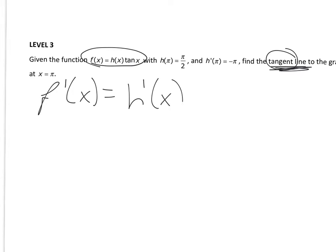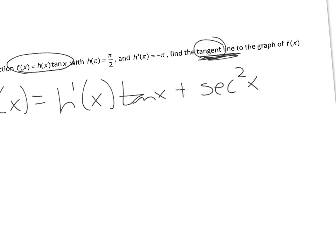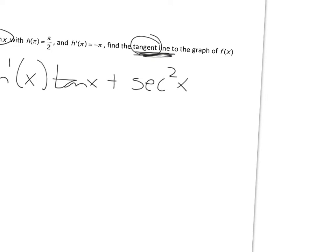And by the product rule, derivative of the first term times second, plus derivative of the second term, and I learned that the derivative of tangent was secant squared times h of x, which is my first term there.